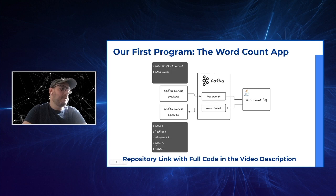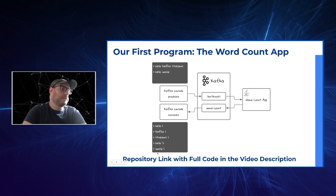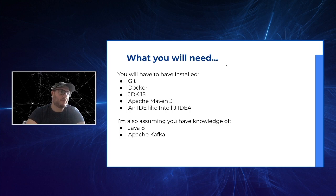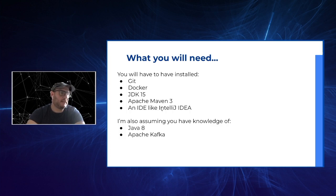Don't worry — you'll be able to download the full code from a GitHub repository which is linked in the video description. What you will need for this tutorial: you'll have to have installed Git, Docker, JDK 15, Apache Maven 3, an IDE like IntelliJ IDEA. I'm also assuming that you have a fair amount of knowledge about Java 8 and Apache Kafka. I will add download links for all these dependencies in the video description.